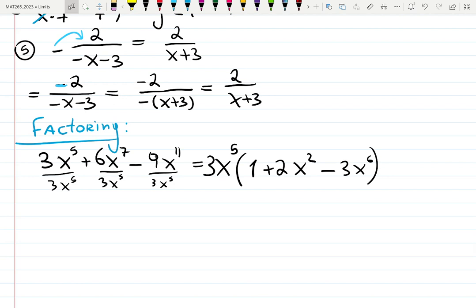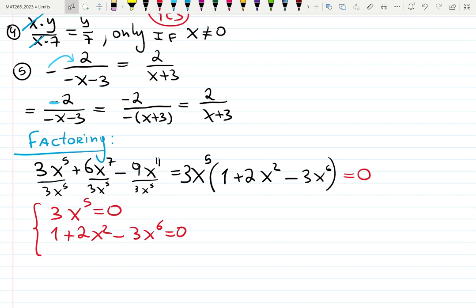If I set it equal to 0, do you remember what it means? It means 3x to the 5 equals 0 or 1 plus 2x squared minus 3x to the 6 equals 0. And then you use quadratic formulas or any other way, sometimes technology, to actually solve for solutions. Does that make sense? Questions about this?